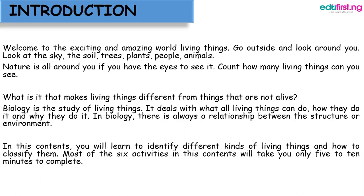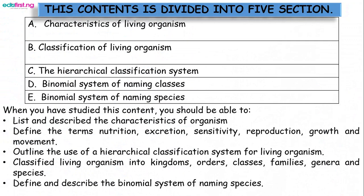In this content today we are going to learn how to understand different kinds of living things and how to classify them. Most activities will take only five to ten minutes to complete. The content is divided into five sections: the characteristics of living organisms, the classification of living organisms, the hierarchical classification system, and the binomial system of naming species.